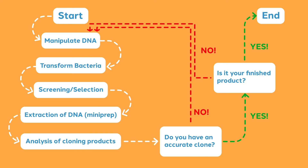Steps 2 through 4 — transformation, selection, and extraction of DNA — are extremely routine. Analysis of your cloning products or clone verification is essential, but there are really only a few options to choose from. You will have the most flexibility when you are manipulating your DNA. Our upcoming videos will get into the various techniques you can choose from as you plan your cloning project.